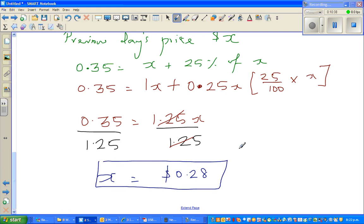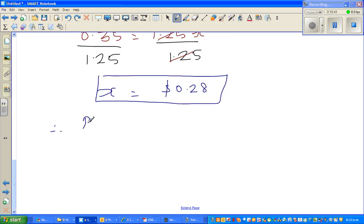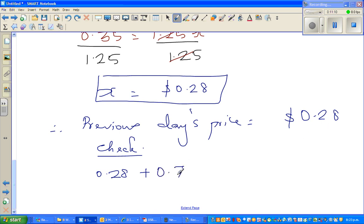Therefore, previous day's price is 0.28. Now to check your answer, 0.28 plus what is a quarter of, 25% is a quarter. So half is 0.14 and quarter would be 0.07. And that is 0.35. So what we have done is right. And you should be happy with your result. So you can give yourself a happy face. See you in the next video. Thank you.